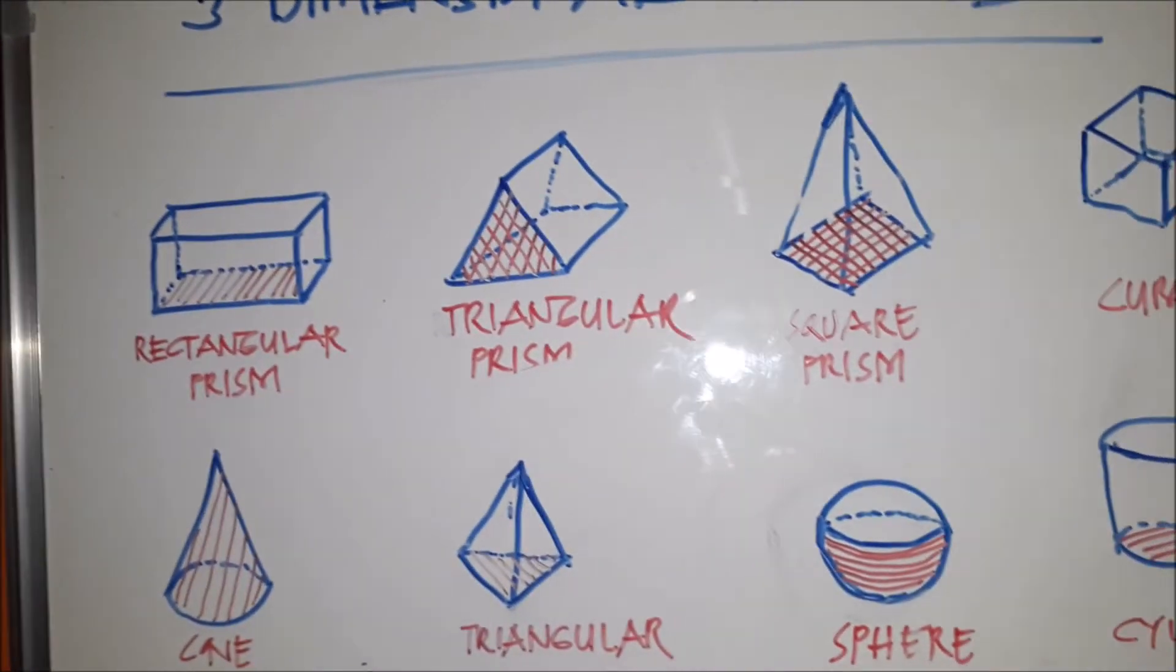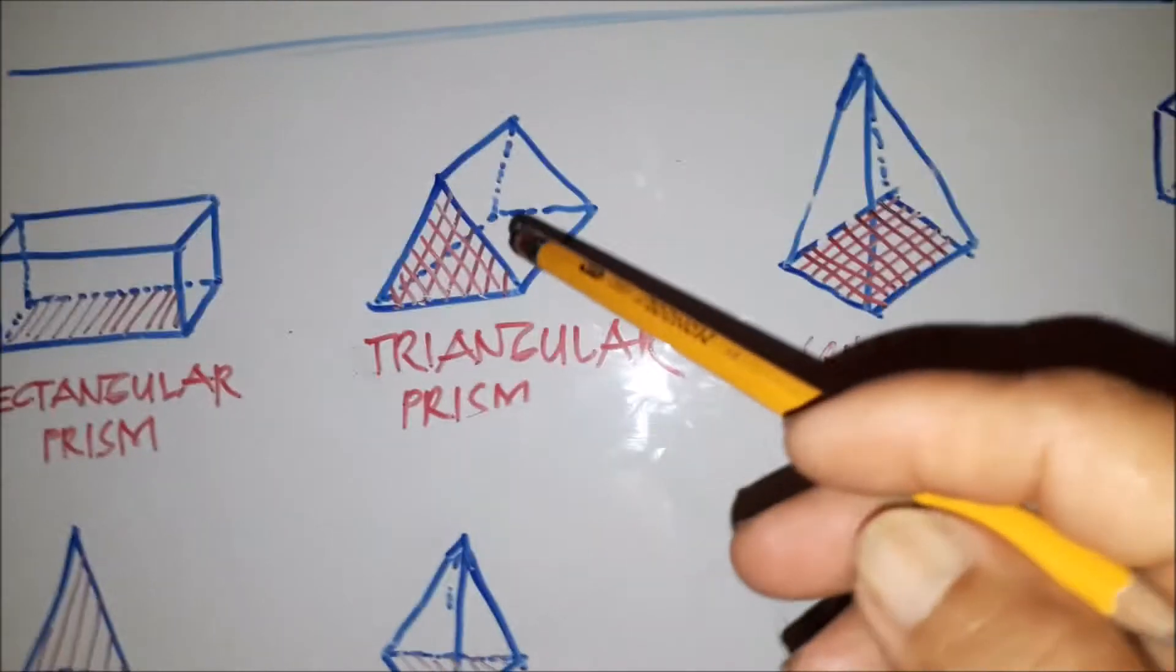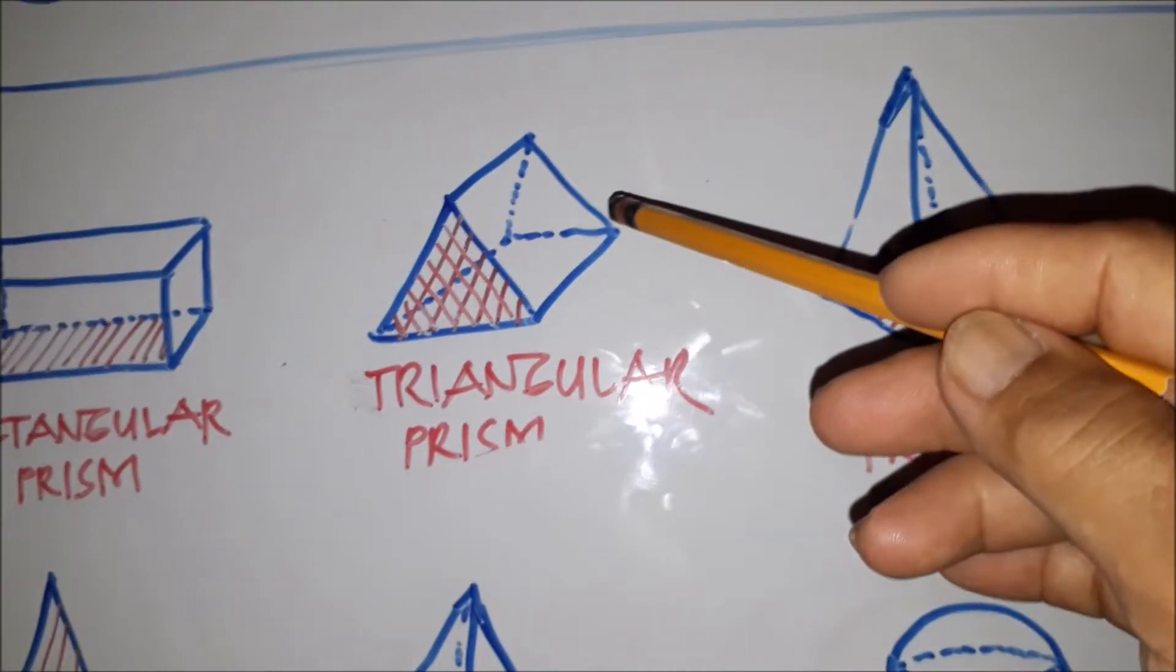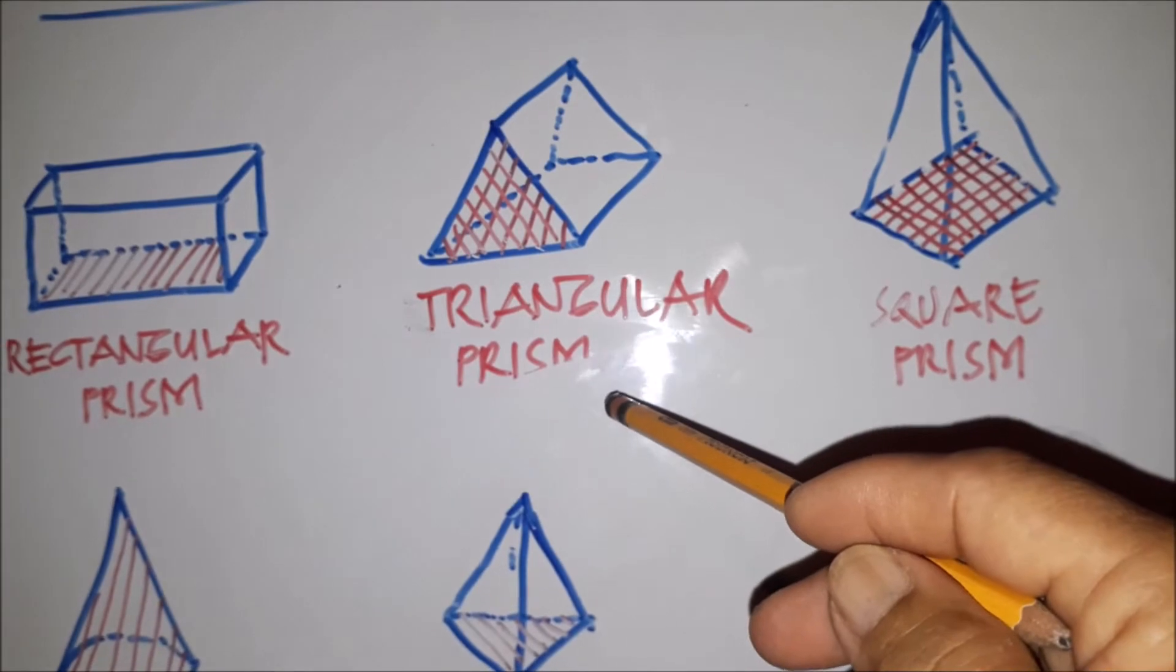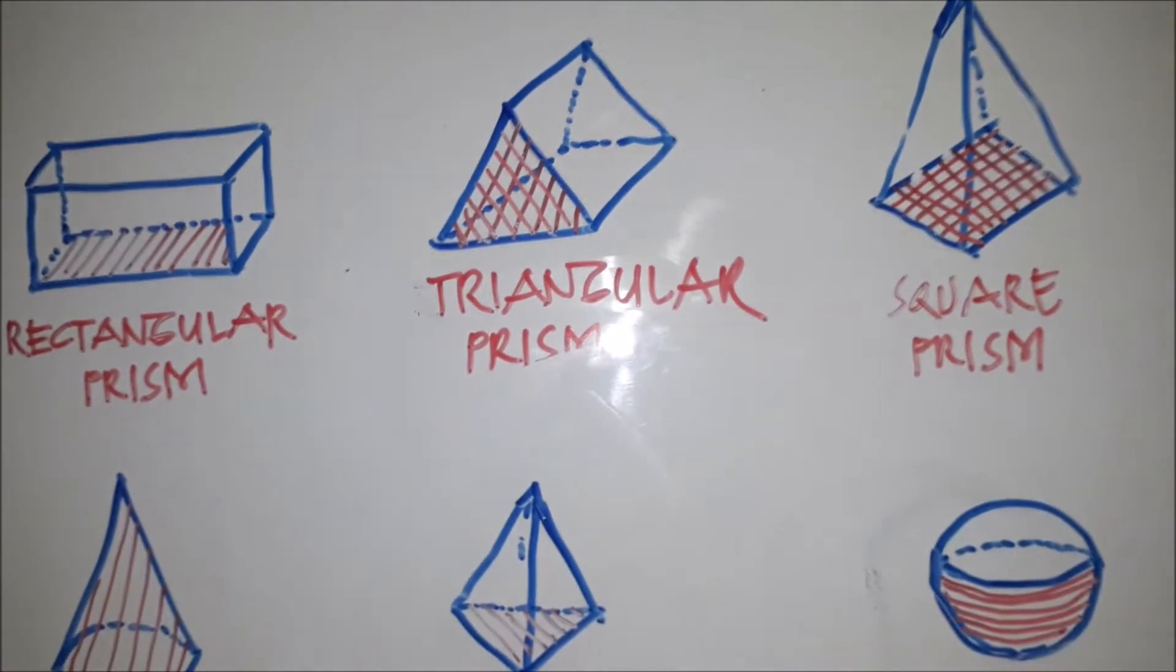And then we have also triangular prism. We have the triangle here at the front and on the rear, so this one is triangular prism.